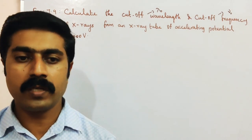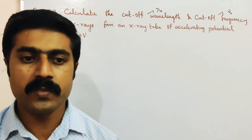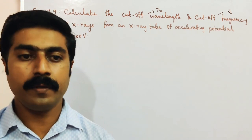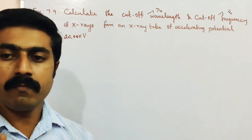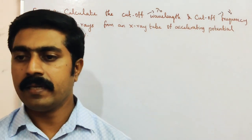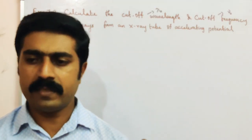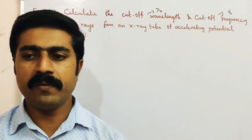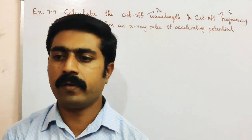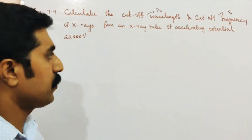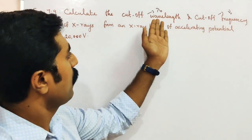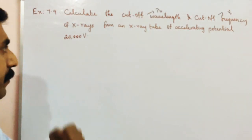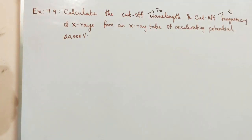The cutoff frequency is the minimum frequency at which the photoelectric emission stops completely, however great the intensity may be. So cutoff wavelength corresponds to minimum wavelength, and cutoff frequency is the minimum frequency for photoelectric emission.